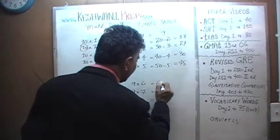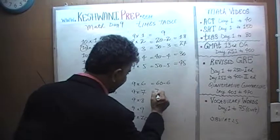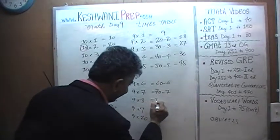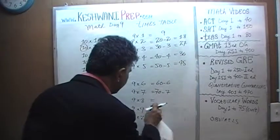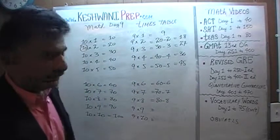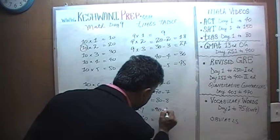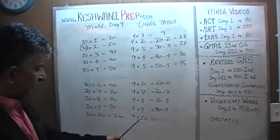Nine sixes are going to be the same as ten sixes, which is sixty. Then you take away one six. Nine sevens are going to be ten sevens minus a seven. Nine eights are going to be ten eights, which are eighty. Ten eights, I know, are eighty. Ten eights are eighty. If I take away one eight from the ten eights, I will have nine eights. Similarly, nine nines are going to be ten nines, which are ninety. Take away one nine. And of course, we know ten tens are one hundred, so nine tens are going to be ninety.